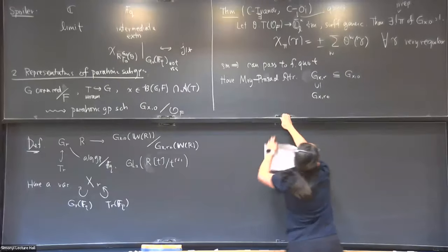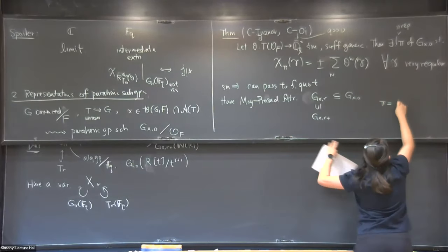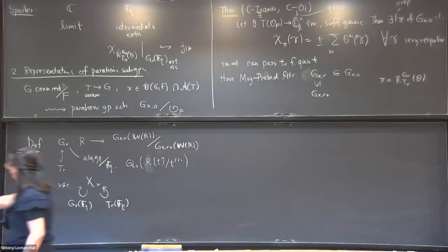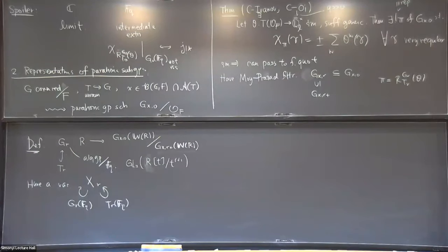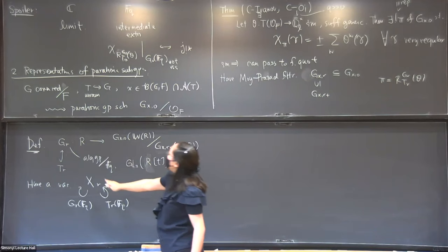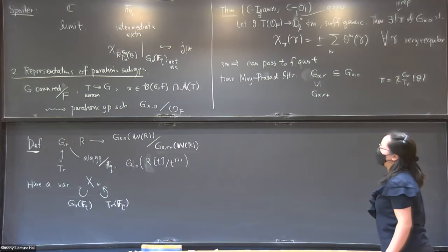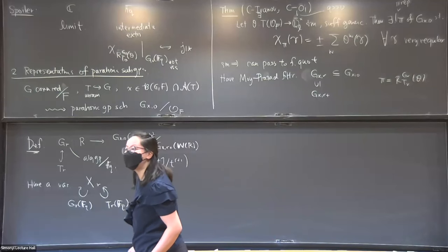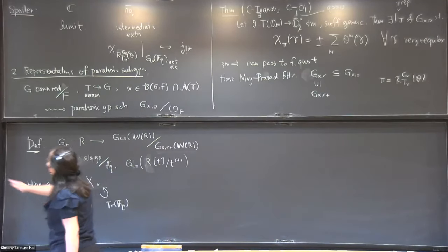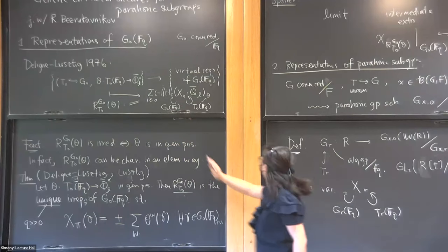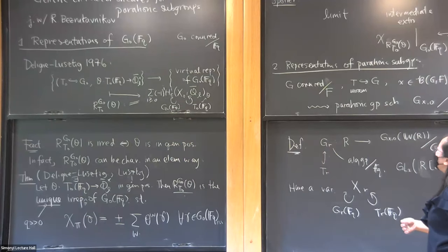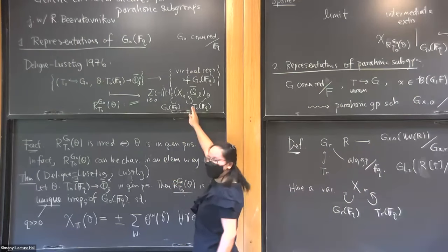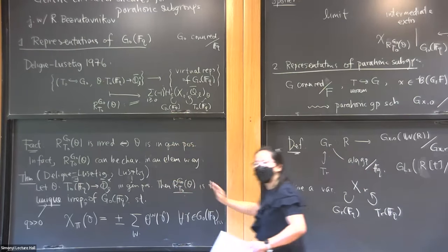The π in the theorem equals R^{G_R}_{T_R, θ}, defined in completely the same way as before: we take the cohomology of X_R, take the θ-isotypic component with respect to the T_R action, and then take the alternating sum. Following an idea of Lusztig, we can write down the definition of X_R that's completely parallel to the definition of X_0.